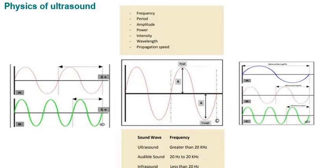Sound travels in a particular medium in a linear fashion with a particular frequency, amplitude, and wavelength. Ultrasound is produced when the frequency of sound exceeds 20 kilohertz — it is not in the audible range. The normal audible range is between 20 Hz to 20 kHz; below 20 Hz is called infrasound. Like sound waves, ultrasound has frequency, amplitude, wavelength, power, and intensity.